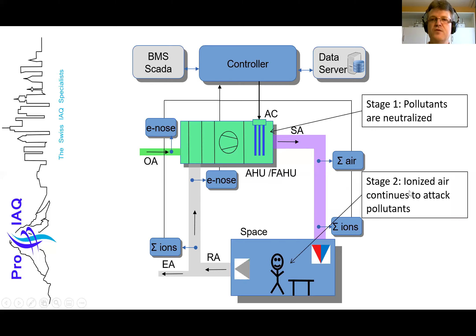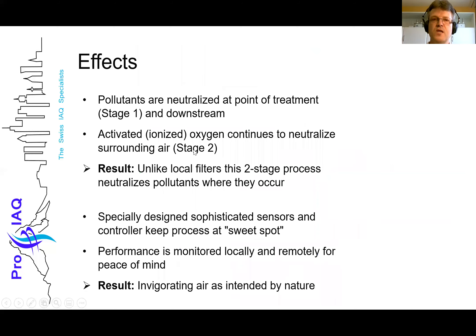The first stage: pollutants are neutralized after the ionization stage inside the supply air duct. The second stage: the ionized air continues to attack pollutants inside the space where they occur. If somebody eats fish or smokes a cigarette, the air is still activated and we can react immediately. We don't have to bring the air to the filter stage — we bring the filter action inside the space. The two-stage process neutralizes pollutants where they occur, unlike a local filter.